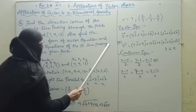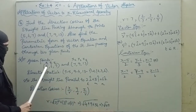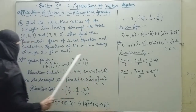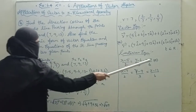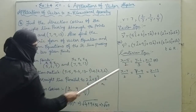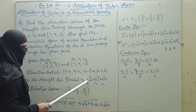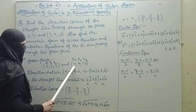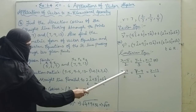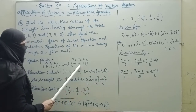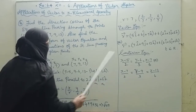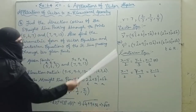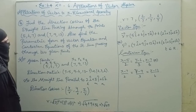Using the second point (x2, y2, z2) = (7, 9, 13), the Cartesian equation is also written as: (x minus 7) by 2 equals (y minus 9) by 3 equals (z minus 13) by 6. This is the Cartesian equation. That's all.